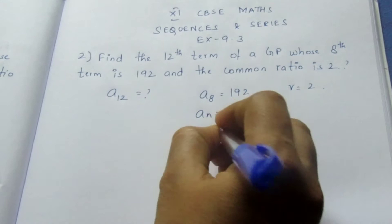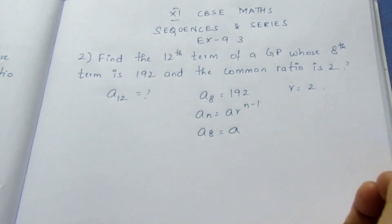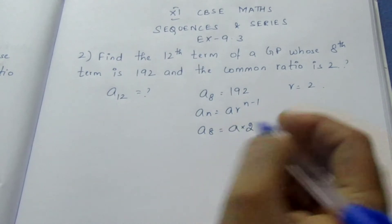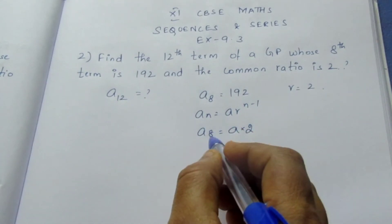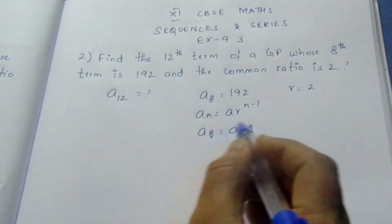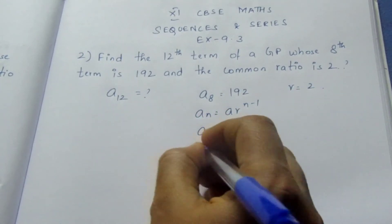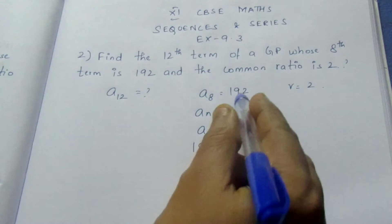Here it is A8 equals... we don't know A, so let A be A itself. R is 2, so we have 2 to the power of n minus 1. N is 8, so 8 minus 1 is 7. We know the value of A8, that is 192. If I bring 2^7 to this side, it comes as a divide.